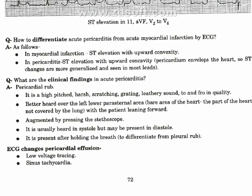How to differentiate acute pericarditis from acute myocardial infarction by ECG: In myocardial infarction, ST elevation is with upward convexity. In pericarditis, ST elevation is with upward concavity. Because pericarditis involves the whole heart, ST changes are more generalized and seen in most leads.